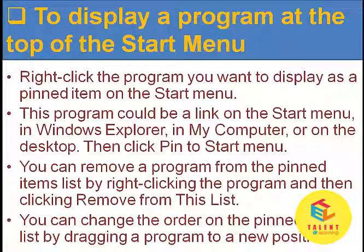In order to display a program at the top of the Start menu, right click the program you want to display as a pinned item on the Start menu. This program could be a link on the Start menu, in Windows Explorer, in My Computer, or on the desktop. You can also remove a program from the pinned item list by right clicking the program and then clicking Remove from this list.